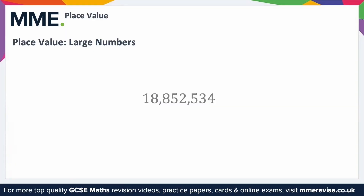It's important to know what each digit within a number represents — this is known as place value. For example, the 8 here has a different value to the 8 here because it's in a different position in the number.